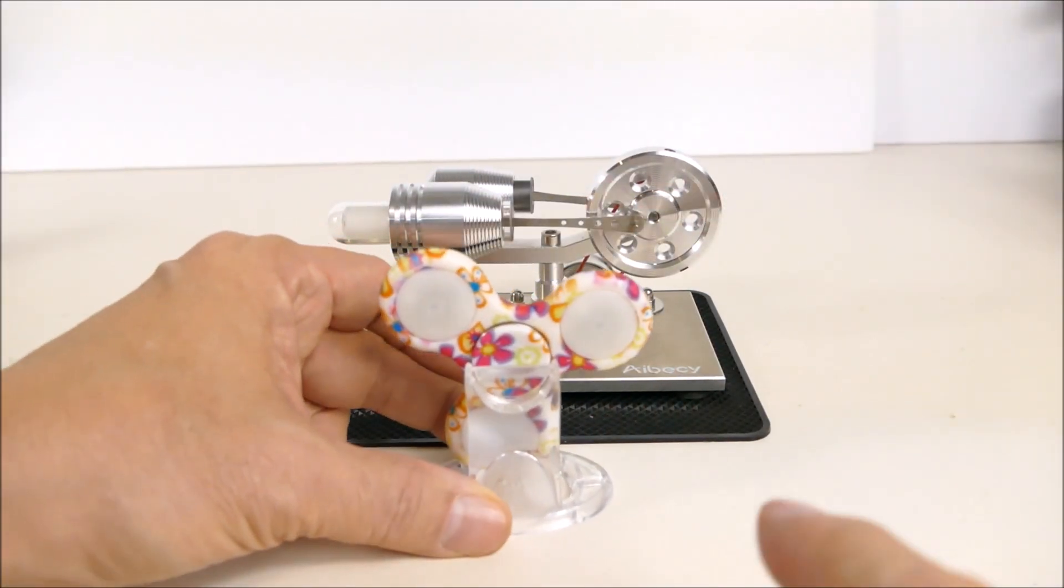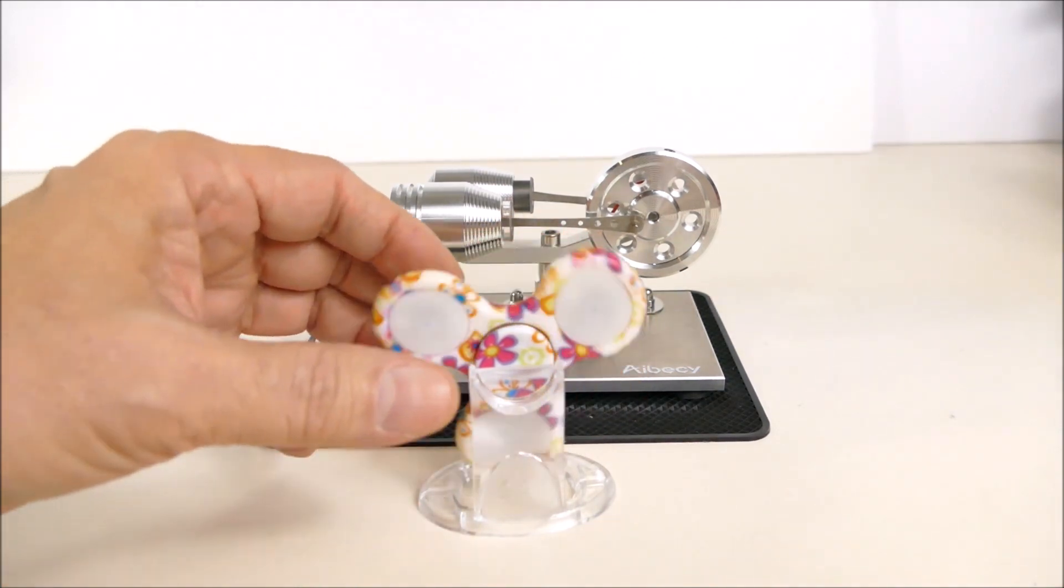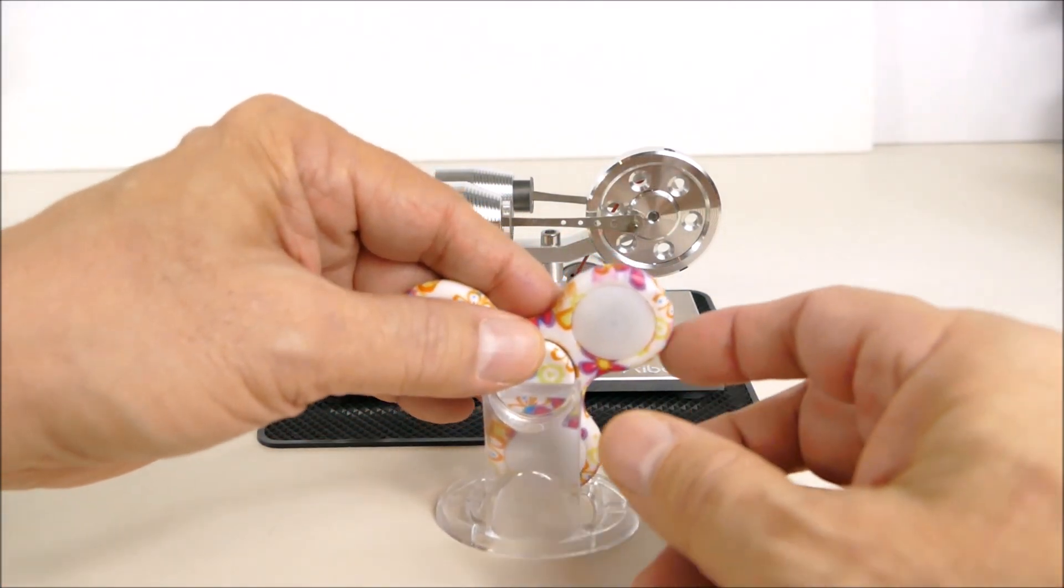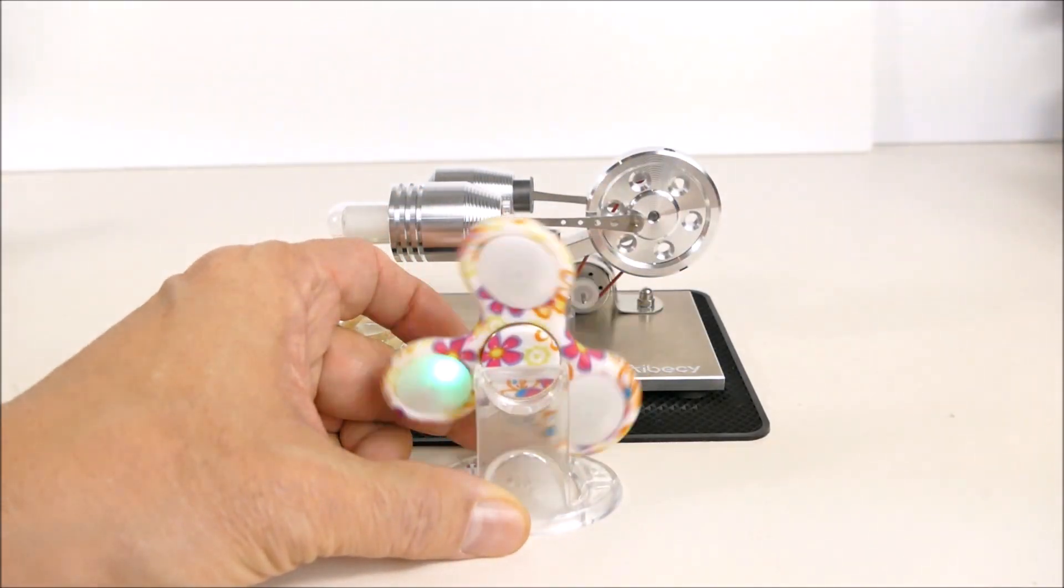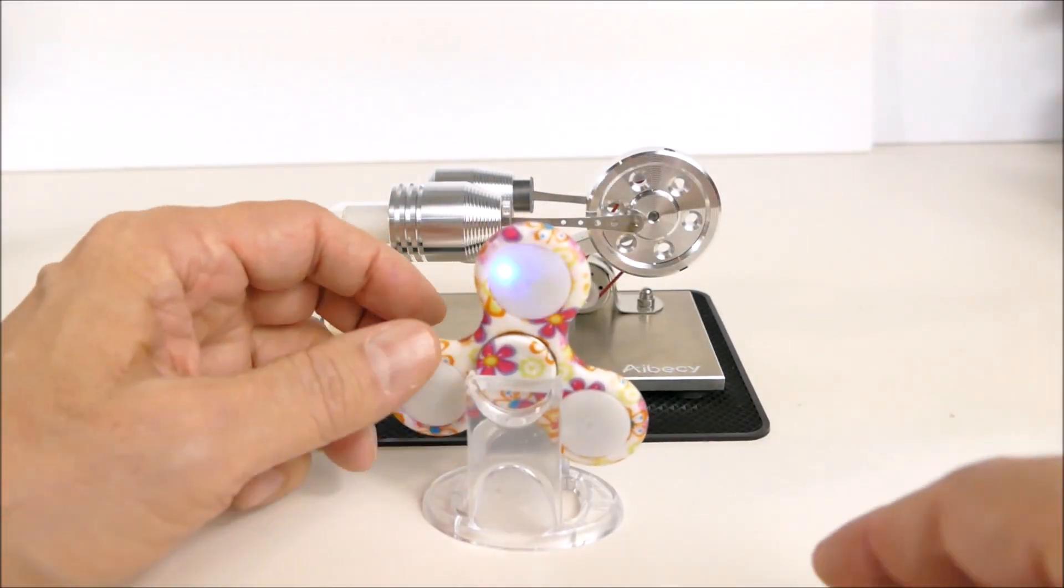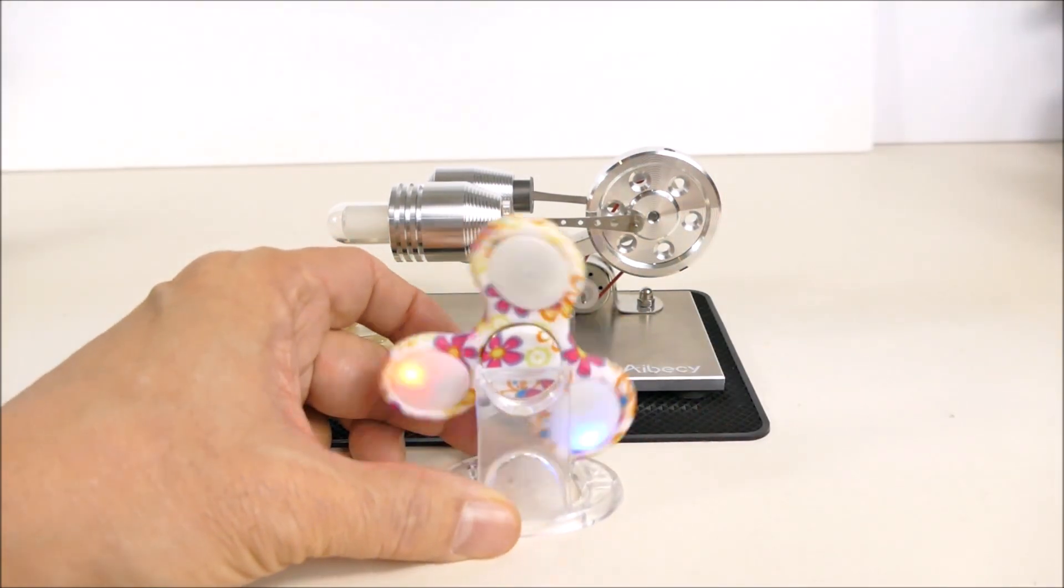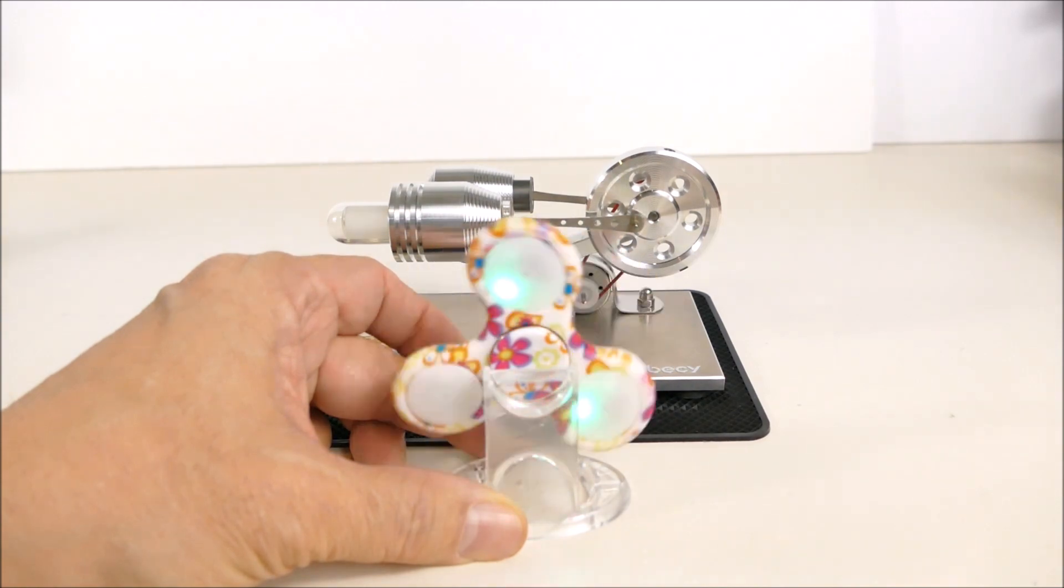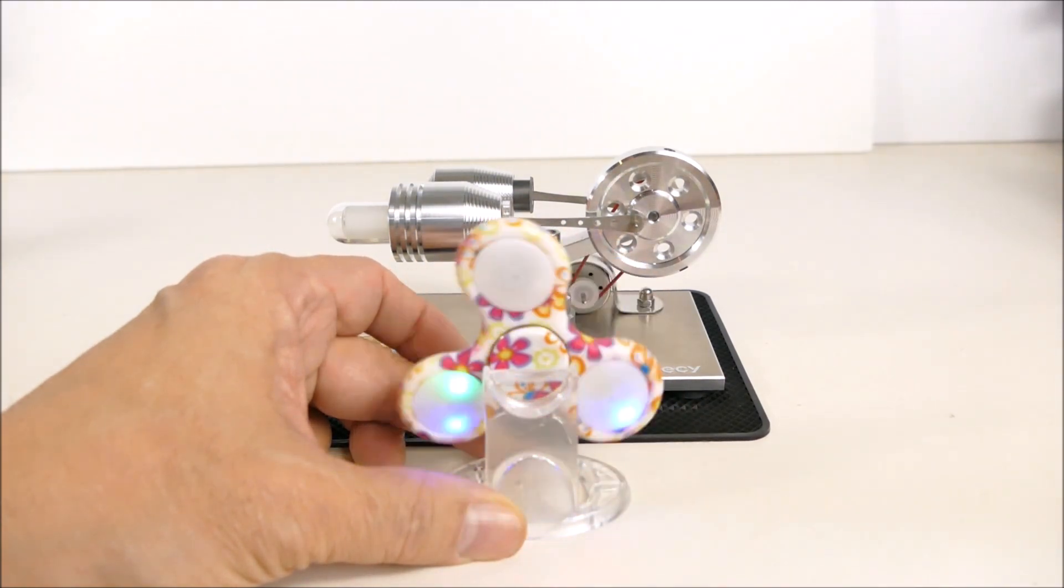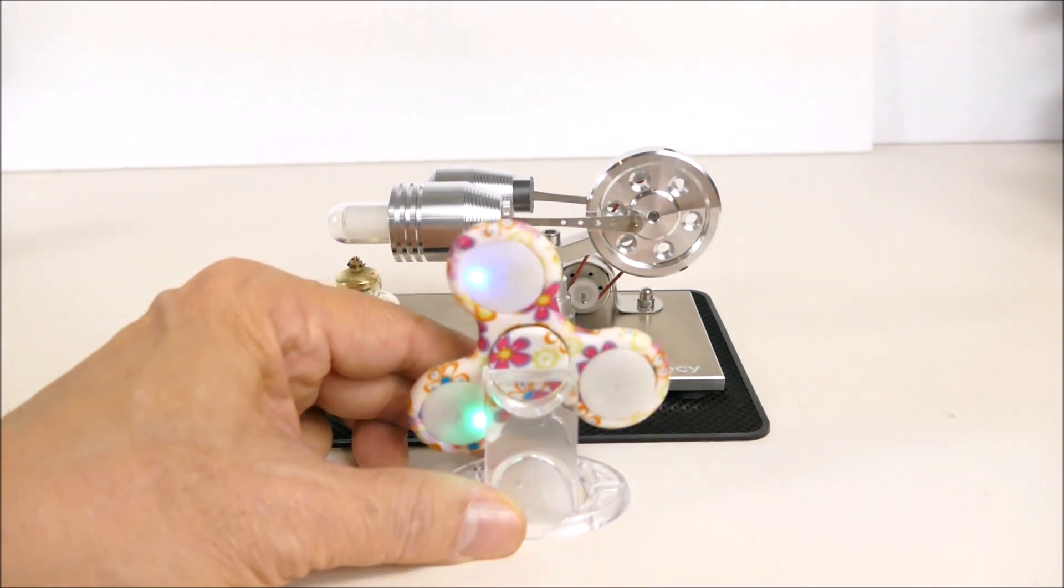So this is a toy spinner that will spin for a long time on its little bearing. And it has these little LEDs that create persistence of vision patterns and they can have multiple. Now the camera doesn't do a great job of seeing what your eye sees on these persistence of vision, but it does give you a good idea of what it might be looking like.